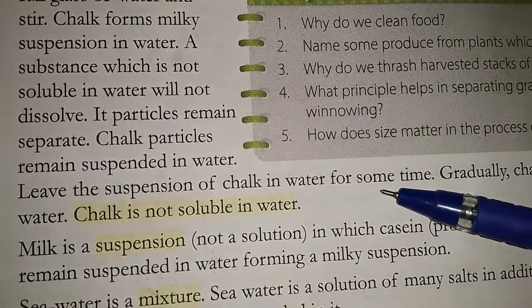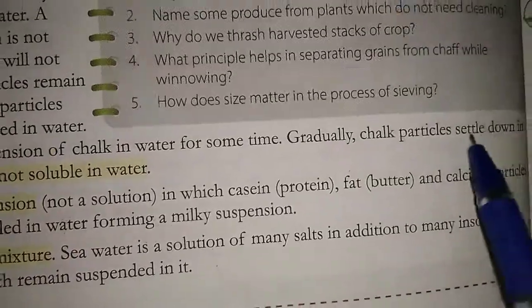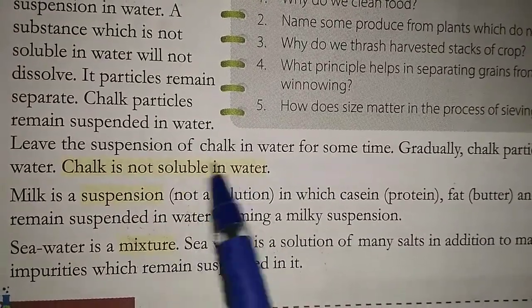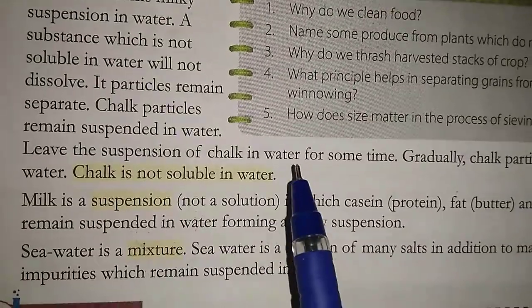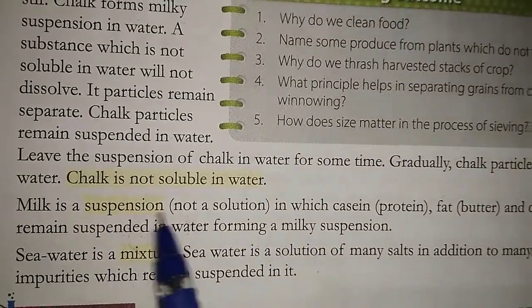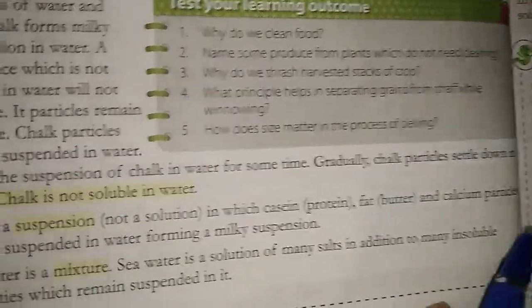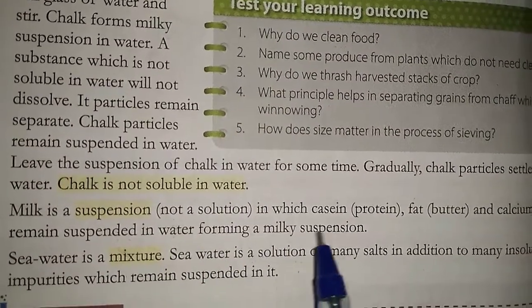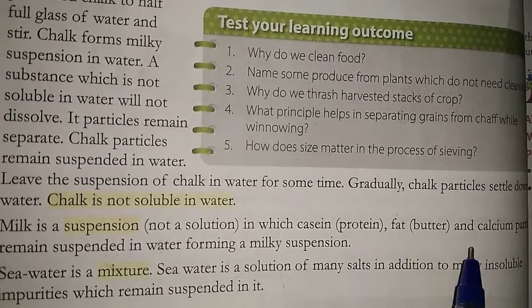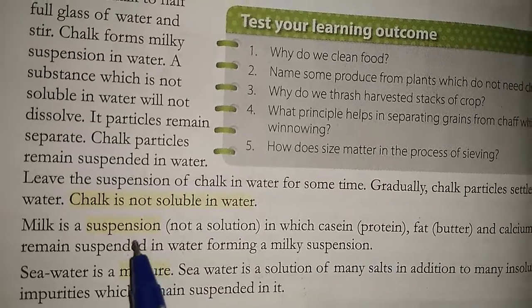Leave the suspension of chalk in water for some time. Gradually, chalk particles settle down because chalk is insoluble in water. Another example of suspension is milk. Milk is a suspension in which casein protein, fat, and calcium particles remain suspended in water, forming a milky suspension.